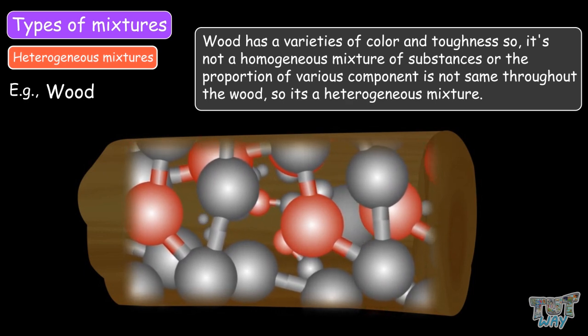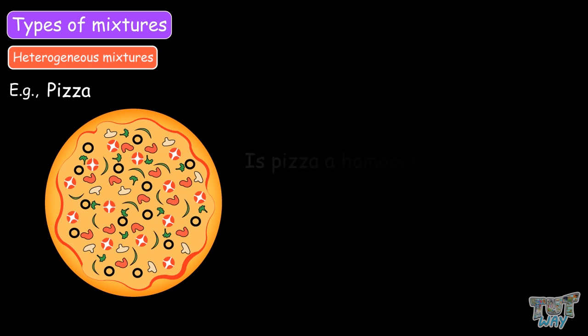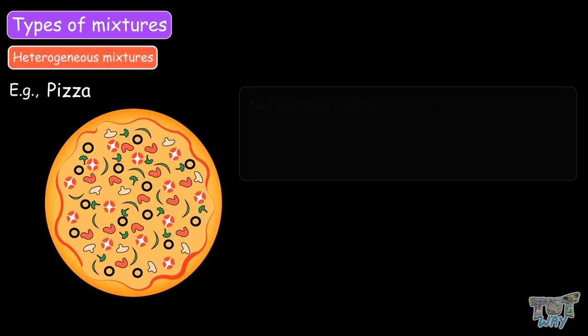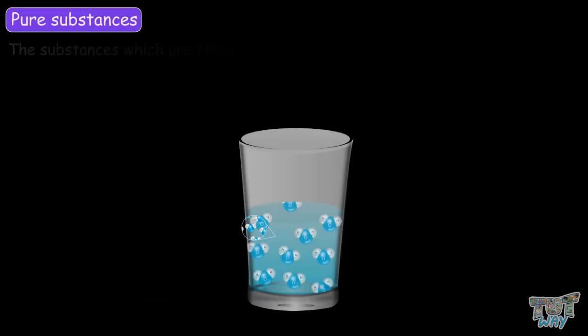Here we have another example — pizza. Is pizza a homogeneous mixture of various substances? No. Pizza is a heterogeneous mixture, as various components are mixed non-uniformly, or the proportion of the various components is not the same everywhere in the pizza. So friends, today we learned what is a pure substance, what is a mixture, and types of mixtures, and much more.